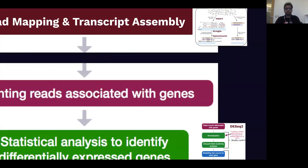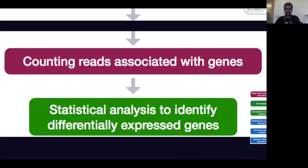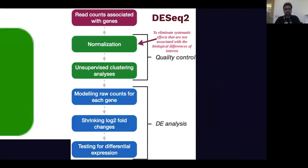After read mapping and transcript assembly, the next step is to perform statistical analysis to identify differentially expressed genes. The R package we'll be using is DESeq2 for differential expression analysis. There are quite a few steps before you can claim statistical significance for differentially expressed genes. They go through a process of normalization for the read counts, primarily to eliminate systematic effects not associated with biological differences of interest. After normalization, DESeq2 uses a negative binomial model for modeling the raw counts for each gene, and eventually testing for differential expression.